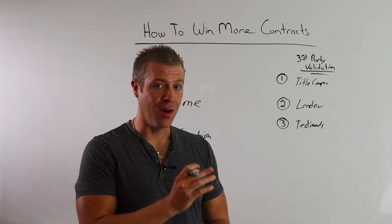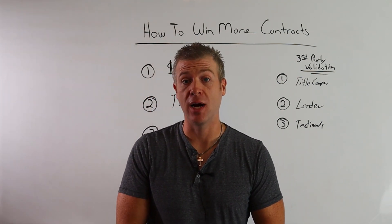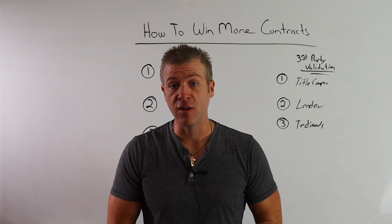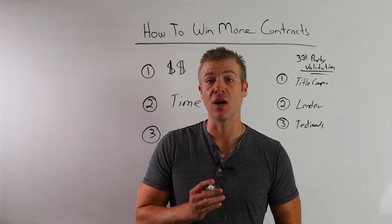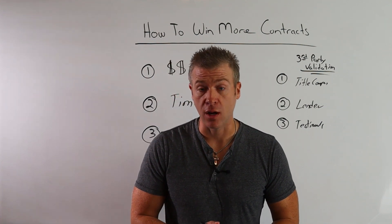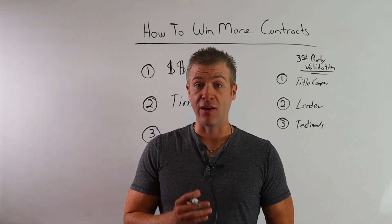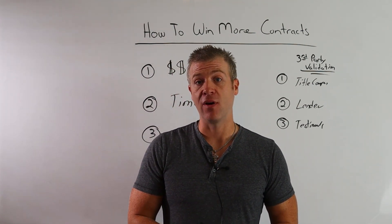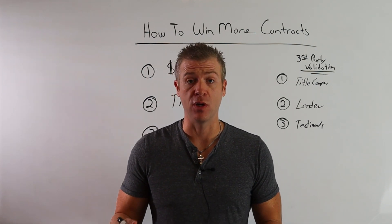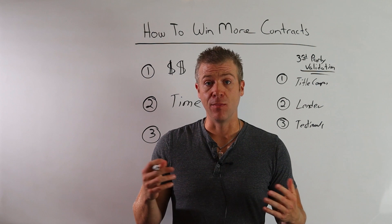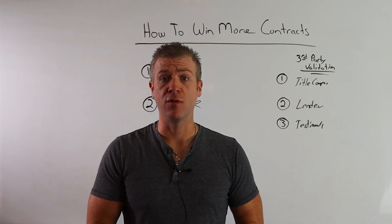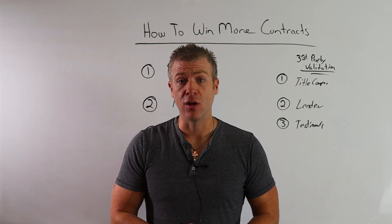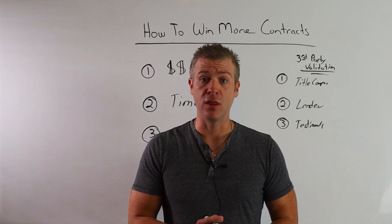Say you're going for a house contract and there are a couple other investors. What I usually do is say, 'Hey, we have an incredible track record — we've never asked somebody to drop their price before closing. I'd like to get you in contact with my title company.' This is a third-party insured company that has no incentive to influence you except to tell the truth, which is that I close transactions there all the time and never ask for price reductions. Get them in touch with your closing agent so they can validate you always do what you say and bring the money to closing.